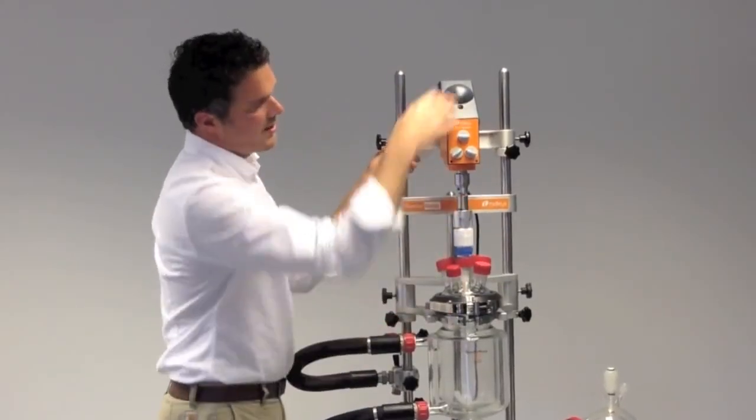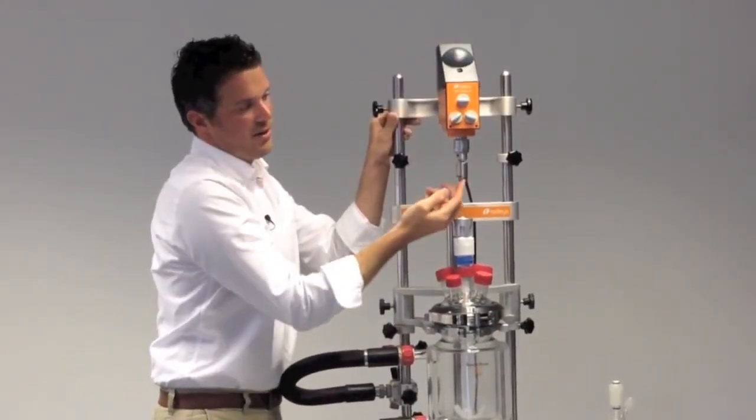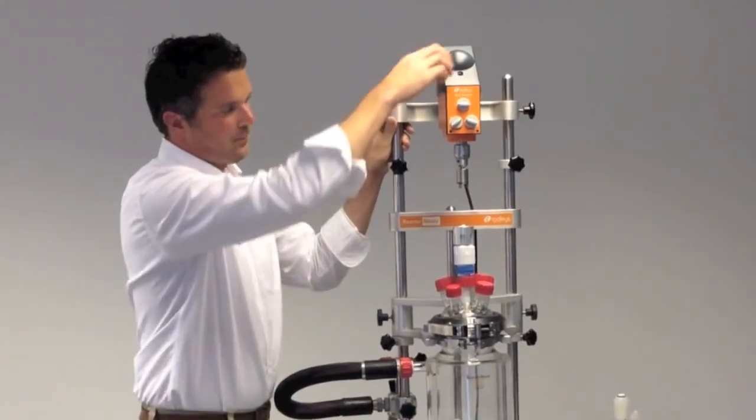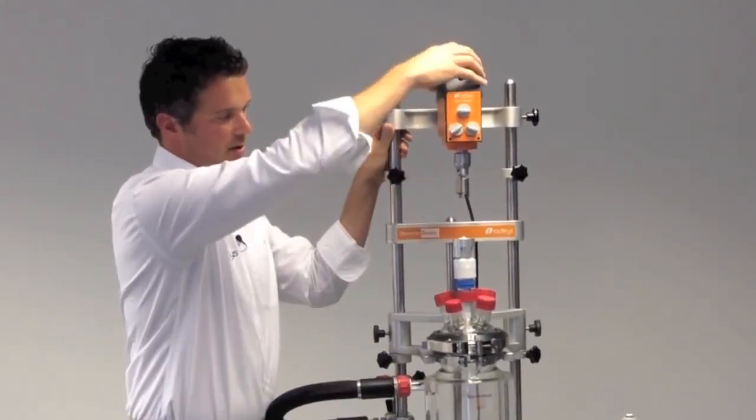Once you've undone the sides, this just slides up and you can see here is the three-pin drop-in coupling. You don't need any tools; this is what connects it to the stirrer shaft.